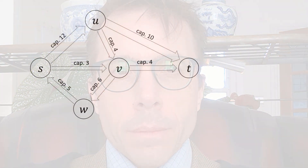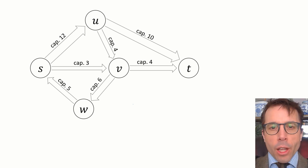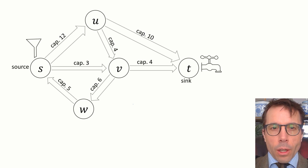Here's a stylised version of the question. Imagine we have a directed graph, and each edge is labelled with a weight, which we'll call capacity. Think of the edges as pipes. Also, let's imagine that there are two special vertices, the source and the sink.